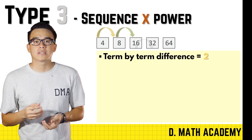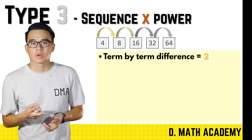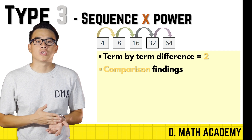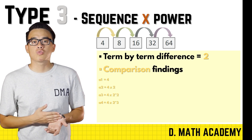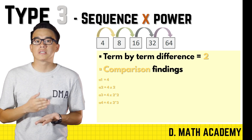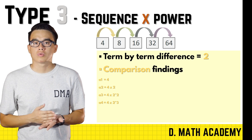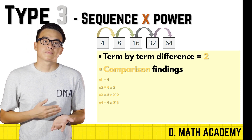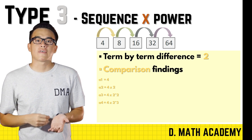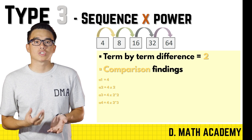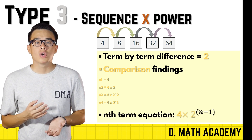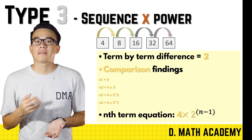The term-by-term difference is actually a multiplier of 2, progressing from each term. So a1 is 4, a2 is 4 times 2, a3 is 4 times 2 times 2, and so on. With that, we have identified a trend and can construct the n-term formula: 4 times 2 to the power of (n minus 1).